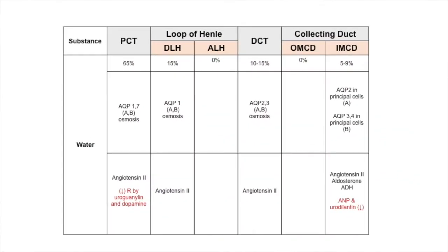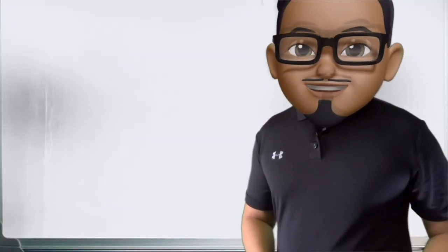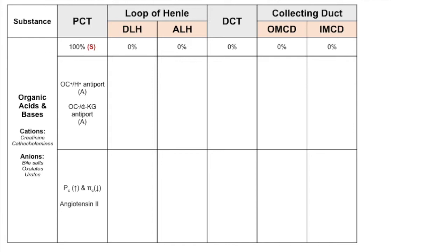Aquaporins for water reabsorption are created by exocytosis of vesicles on the apical side through the action of ADH from the basolateral membrane. Several aquaporins have been identified, with aquaporin-2 having the most clinical significance.